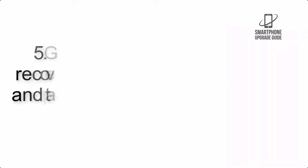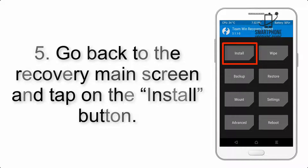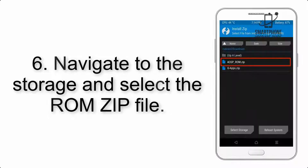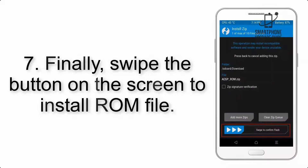Step 4: Swipe the button to wipe the device. Step 5: Go back to the recovery main screen and tap on the Install button. Step 6: Navigate to the storage and select the ROM zip file.